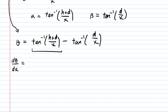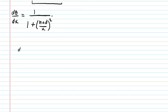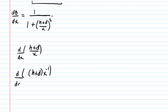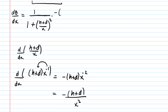Looking at the first term, to compute the derivative of an inverse tangent function, you take 1 over 1 plus whatever function is in the parentheses squared — so 1 over (1 plus ((H+D)/X)²). Don't forget to square that function. Then you multiply by the derivative of the inner function. The derivative of (H+D)/X with respect to X is found by rewriting it as (H+D)·X⁻¹, applying the power rule to get −(H+D)·X⁻², which we rewrite as −(H+D)/X².